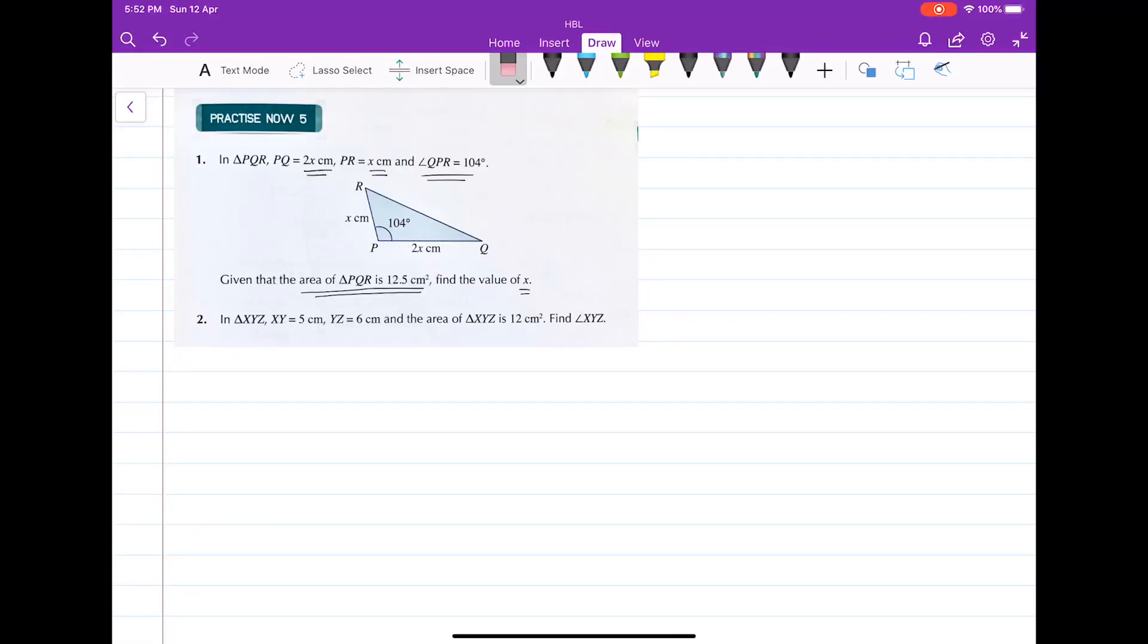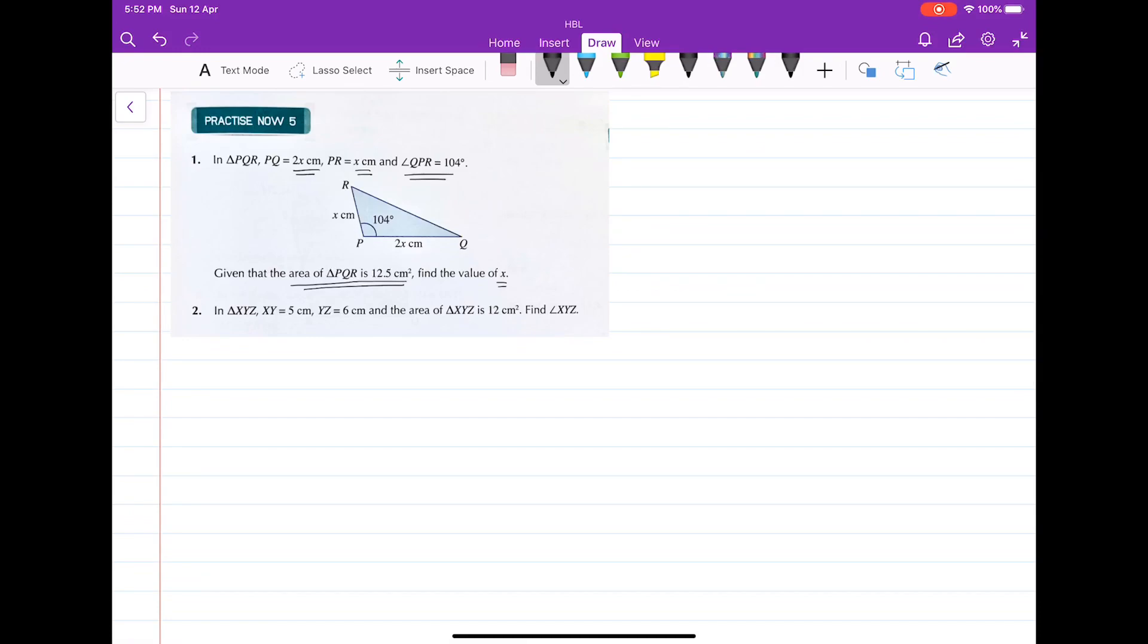Let's consider practice 5. In the first part of the question, PQ is given as 2x, PR is x centimeters, and angle QPR is 104 degrees. The area of PQR is given as 12.5 cm squared. Find the value of x. Let's use our formula again.